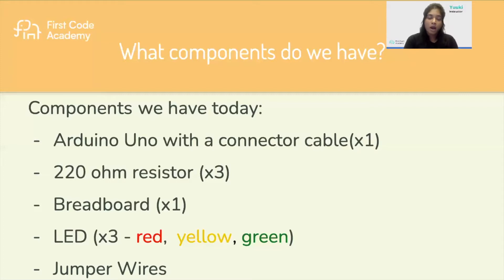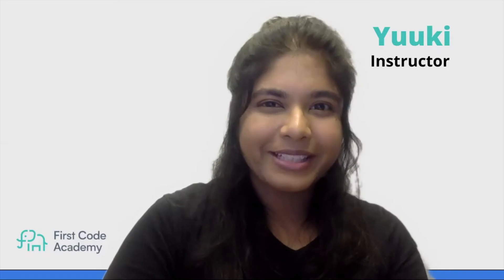The components that we would need to build up the traffic light circuit would be an Arduino Uno with a connector cable, three 220-ohm resistors, one red port, three colored LEDs with red, yellow, and green colors — each representing a traffic light color.